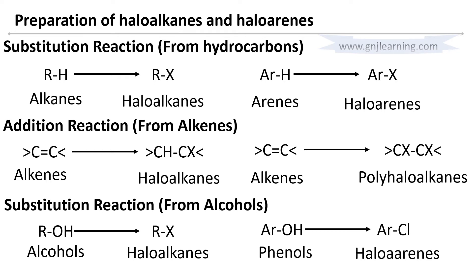Welcome students to the chapter on haloalkanes and haloarenes. In the last part we discussed the preparation of haloalkanes and haloarenes. There are three main methods. The first is substitution reaction from hydrocarbons: in alkanes, one H is substituted by X to get haloalkanes; in arenes, the aromatic ring H is substituted by X to get haloarenes.